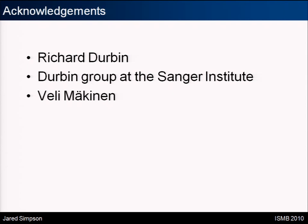Question: The FM index-based aligner has trouble with gapped alignments, so you can't use that method to incorporate reads from, say, 454 with indel errors. Does that impact your idea of using multiple different sequencing technologies? Answer: Yes, we're thinking about how to modify the core of the algorithm to allow gapped alignment. It's really the same as what a lot of aligners do — you do a character match, skip one, increase your space a bit — and we are going to be doing this as we look for 454 reads.